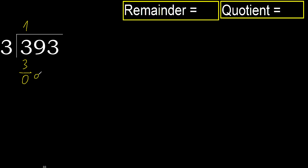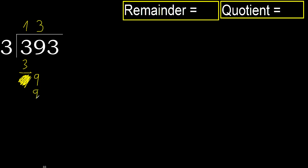Next, bring down 0, eliminate 0 here. Bring down 9. 3 multiplied by 4 is 12 — is greater. Multiply by 3: 9 is not greater. Subtract.